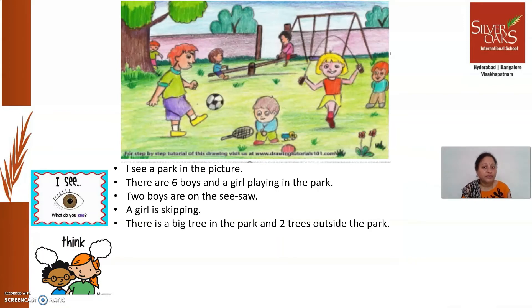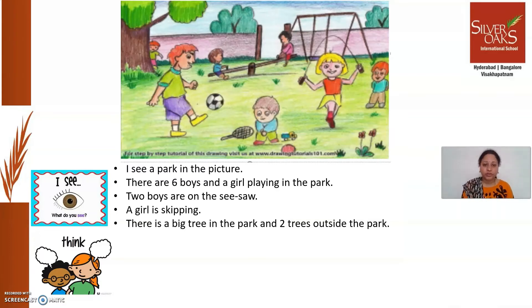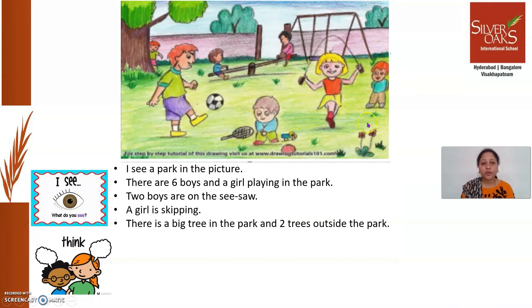I think it is evening — looking at this picture. Nowhere in the picture is it written that it is evening, there is no clock, but the sky is still clear and bright, so I think it is evening. My friend, looking at the same picture, thinks it is Saturday morning. Thoughts can be the same or different. I think in one way and you may think differently. I also think that this boy standing beside the girl is waiting for his turn to do skipping. My friend thinks he is counting the number of skips she is doing. There is no right or wrong — they are all our thoughts.